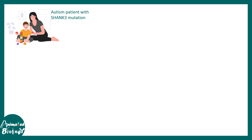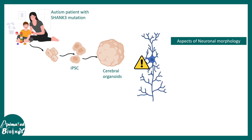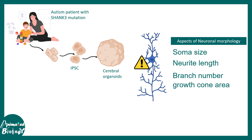Autistic patients with Shank3 mutations were used in a study where their iPSCs were converted into cerebral organoids. When investigators examined the neurons generated from these organoids, they found that soma size, neurite length, branch number, and growth cone area were all altered in the autistic patient-derived organoids. This already gives a clue about how these mutations can affect organoid development and, by extension, brain development in patients.